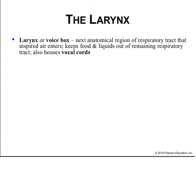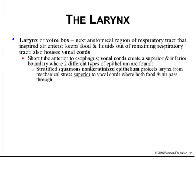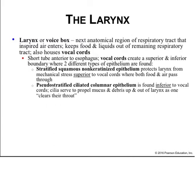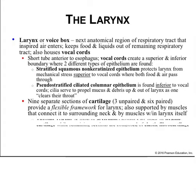The larynx is the next anatomical region that inspired air enters. It keeps food and liquid out of the remaining respiratory tract and houses the vocal cords. It's a short tube anterior to the esophagus. The vocal cords create superior and inferior boundaries where two different types of epithelia are located. Stratified squamous non-keratinized epithelia protects the larynx from mechanical stress superior to the vocal cords, where both food and air pass, while pseudostratified ciliated columnar epithelia is found beneath the vocal cords. Nine separate sections of cartilage—three unpaired and six paired—provide the flexible framework. The thyroid, cricoid, and most of the arytenoid cartilage are hyaline cartilage, while remaining sections are elastic fibrocartilage.